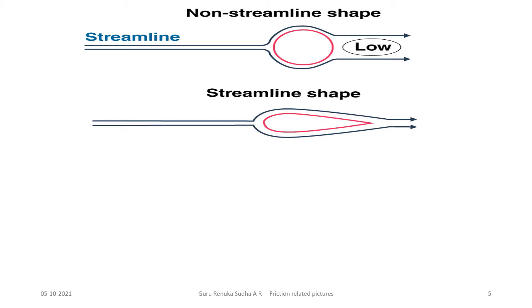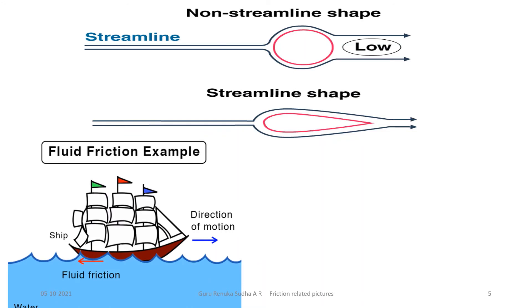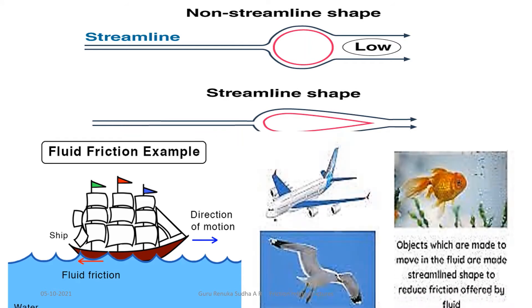You can observe streamlined versus non-streamlined shapes. The streamlined shape helps the object move through a fluid easily, with less resistance — less friction. The shape of a boat is streamlined to lessen friction and aid motion. Similarly, aeroplanes, fish in water, and birds in the sky all have streamlined bodies to reduce friction caused by fluids — air or water.